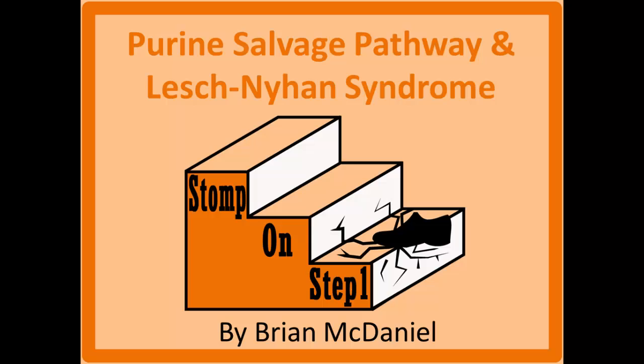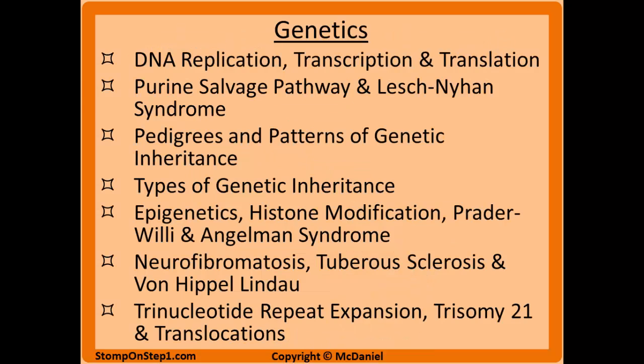Distinguished future physicians, welcome to Stomp on Step 1, the only free video series that helps you study more efficiently by focusing on the highest yield material. In this video we're going to be covering purine salvage pathways, as well as some related diseases such as Lesch-Nyhan syndrome and how it can affect renal stones, gout, and some other things. This is the second of my seven video series on genetics, so I suggest you check out all of these when you are finished.